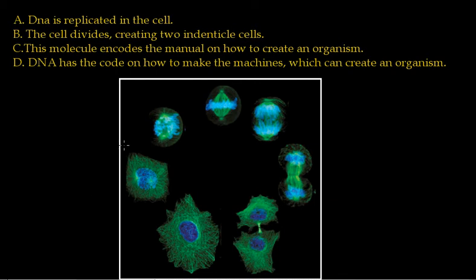As you can see in this picture here, you have a cell which reproduces its DNA, arranges it, finally divides, and then you have two identical cells. And they're all able to do that by the machines that are coded by the DNA.